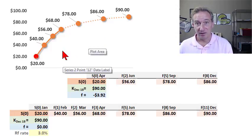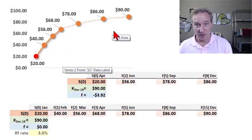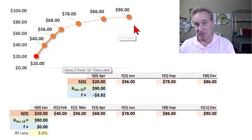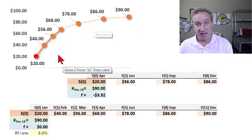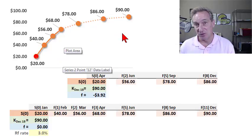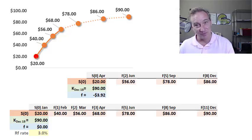I'd like to share three properties of a contango, which is the fancy term for an upward sloping forward curve. Those three properties are what the contango says about the net convenience yield, what it says about the roll return, and its relationship to normal backwardation. And then I'll do the same thing for a curve that's in backwardation or inversion.